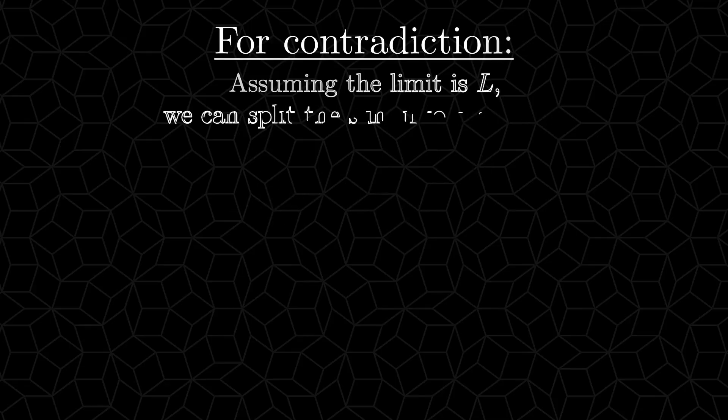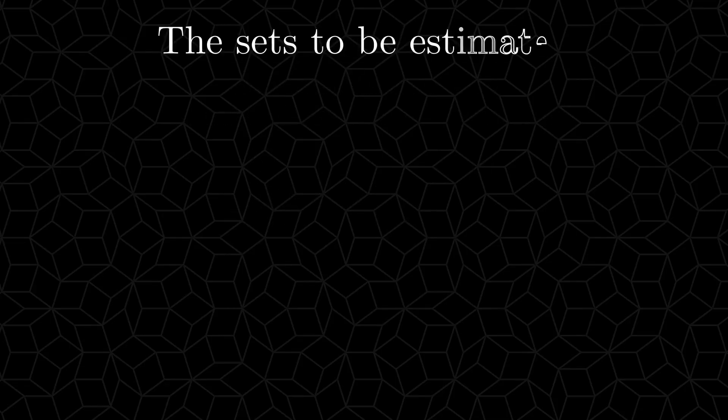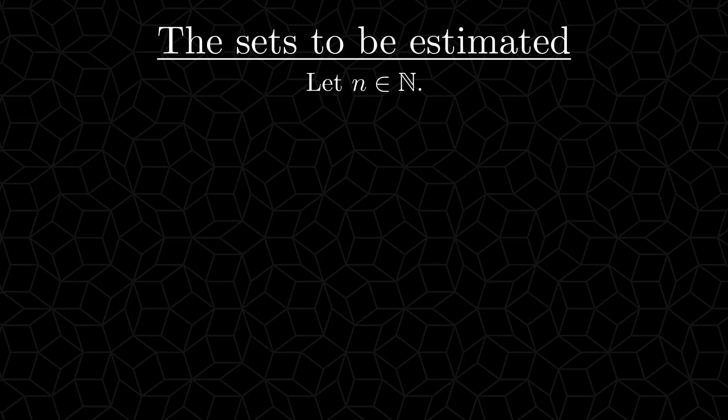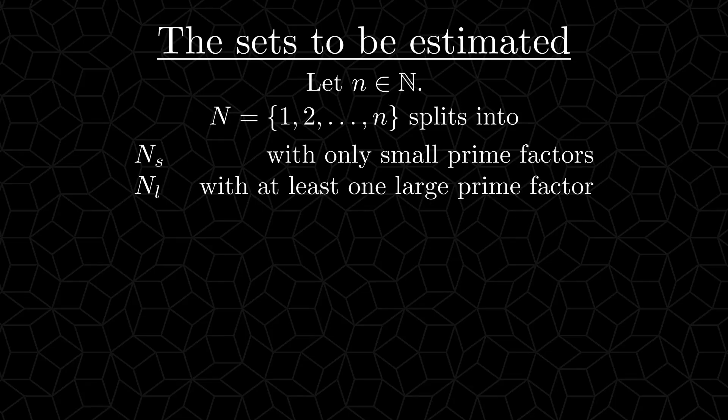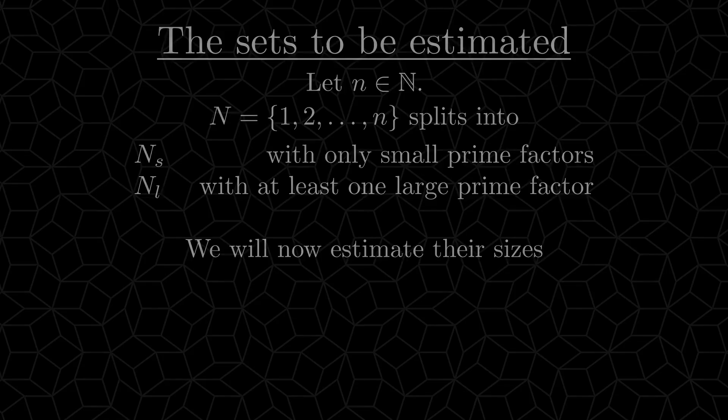With the contradiction assumption out of the way, let's get into counting natural numbers. Pick some natural number n. Let capital N be the set of all natural numbers, up to and including n. We will split this into two parts. The first part, Ns, will consist of all numbers from n which have only small prime factors. And Nl will consist of all the numbers that have at least one large prime factor. We will now estimate the sizes of these two sets.